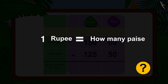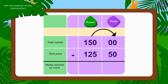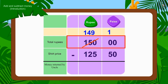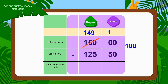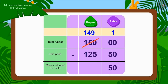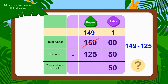How much is Rs. 1 worth? 100 paise. We will borrow Rs. 1 out of Rs. 150. Now, if we subtract 50 paise of Rs. 125.50 from the borrowed 100 paise of Rs. 150.00, we get 50 paise. Now we will subtract the rupees: 149 minus 125 is Rs. 24.00. In this way, Uncle will have to return them Rs. 24.50 paise.